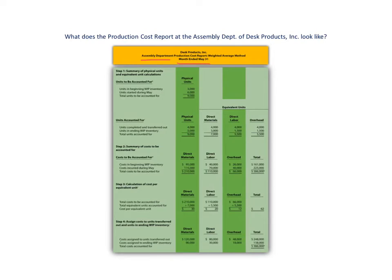This ties in, as I mentioned before, to a previous video, so be sure to look at that video to see where these numbers come from. This production cost report has four different sections, and those four sections align with the four steps that go along with process costing.